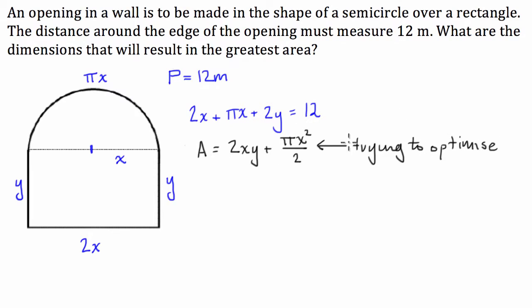Notice how the function that we're trying to optimise is in terms of two variables. Well, that's going to be an issue for us. So what we do is we get this function here, or the function of the perimeter. This acts as like a boundary function. So what we're going to do is we're going to rearrange this function here.